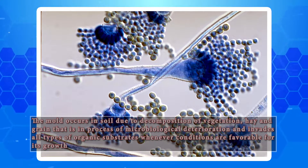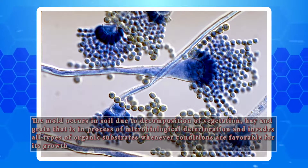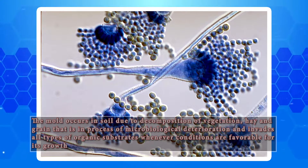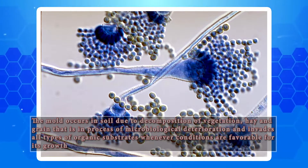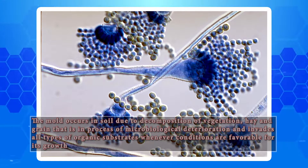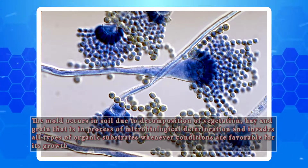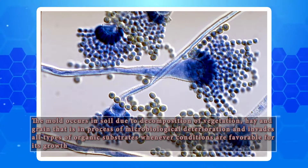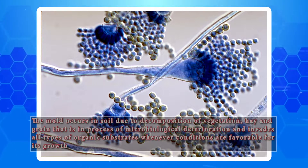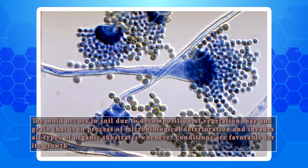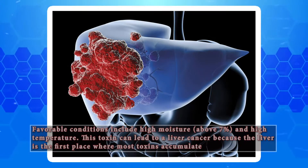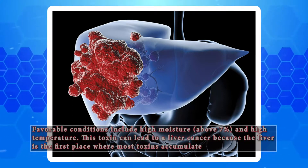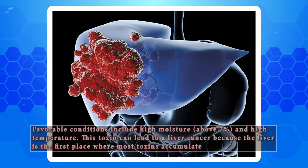The mold occurs in soil due to the composition of vegetation, hay, and grain that is in the process of microbiological deterioration, and it invades all types of organic substrates whenever conditions are favorable for its growth. Favorable conditions include high moisture above 7% and high temperature.